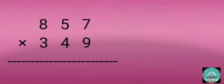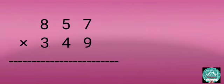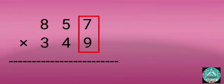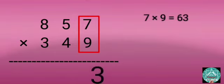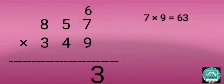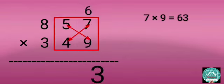Multiply 857 by 349. Step 1: Multiply 7 by 9: 7 times 9 equals 63. Write 3 in the 1s column and carry forward 6.